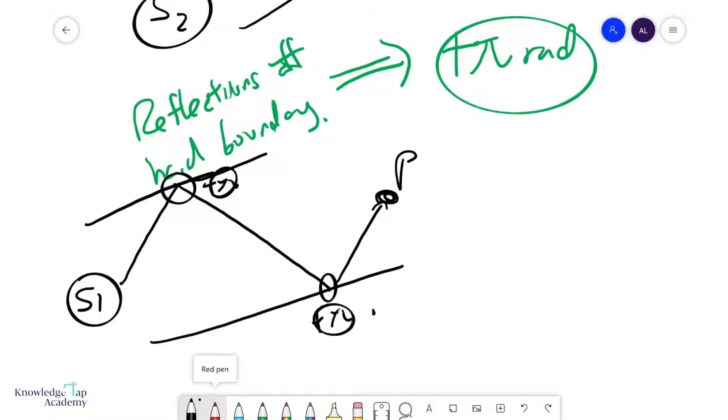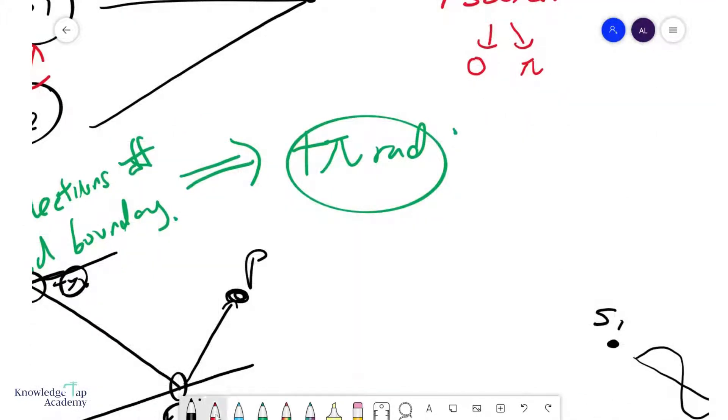And so this will introduce an additional phase difference of plus 2π, right? And so we can call this the phase difference due to reflections.